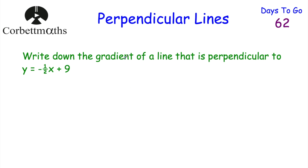The next question: write down the gradient of a line that's perpendicular to y equals negative one half x plus 9. The gradient of this line is negative one half. Since the gradient is negative, the perpendicular gradient will be positive. The reciprocal of one half is 2, so the gradient of the perpendicular line is 2.